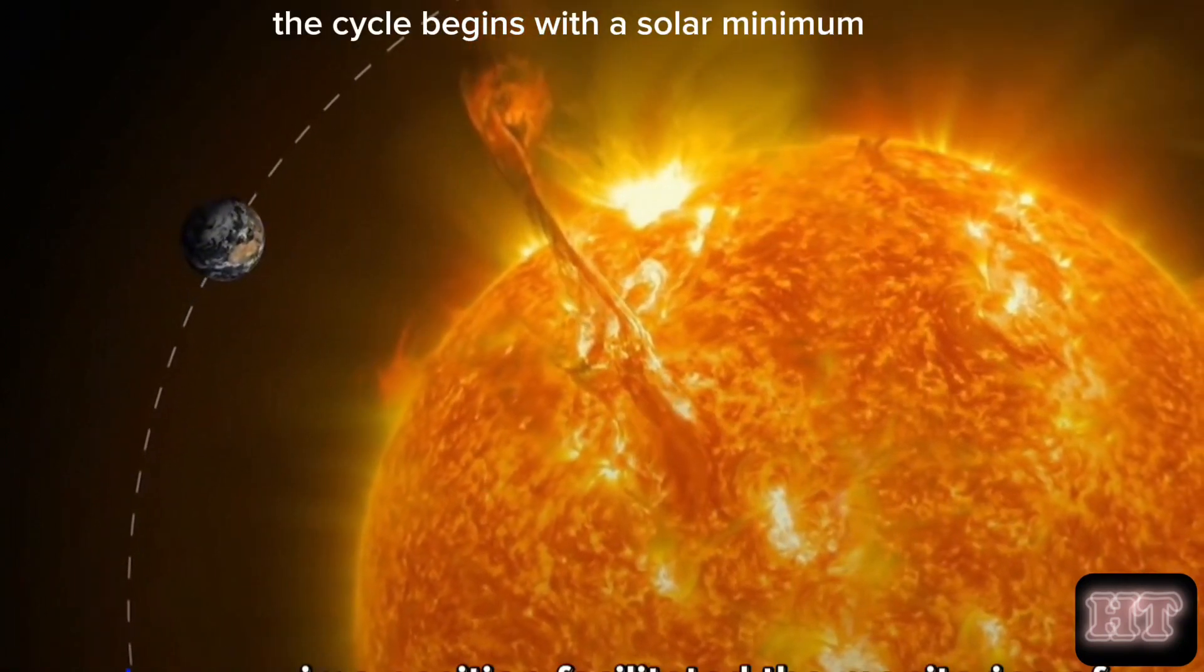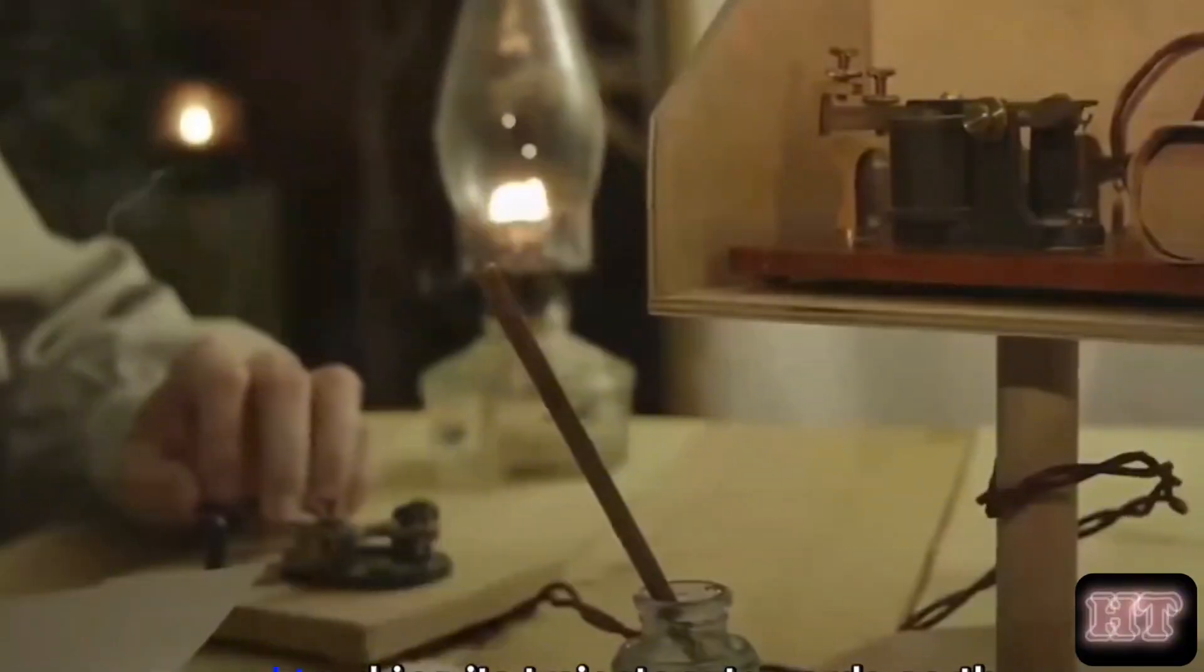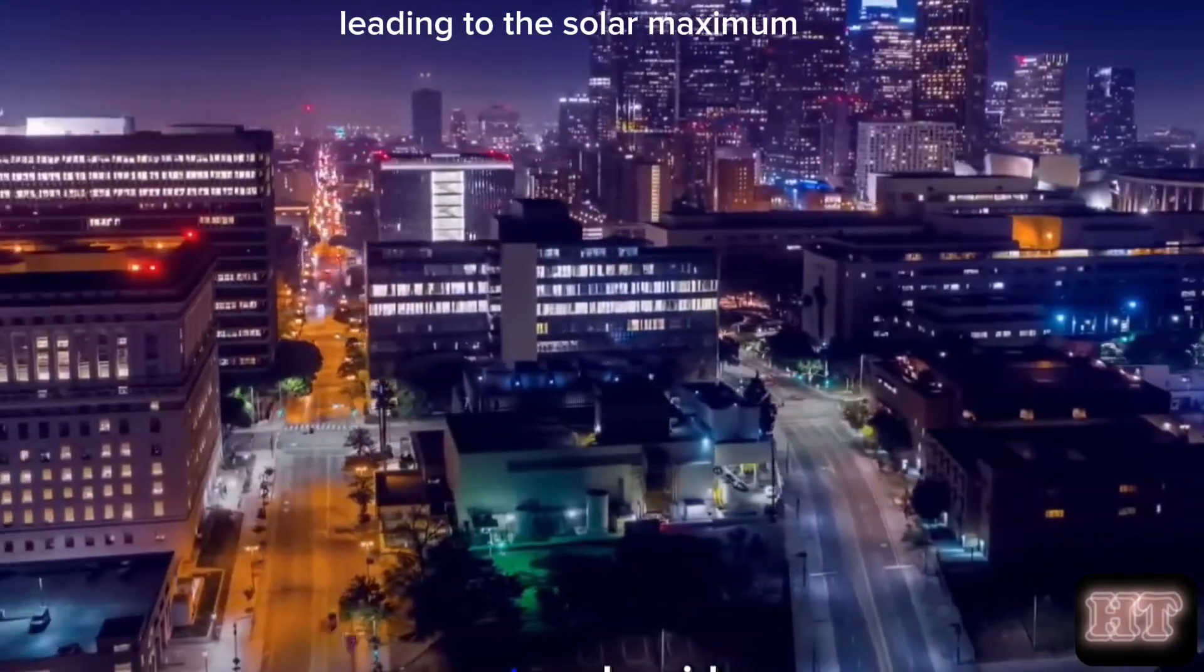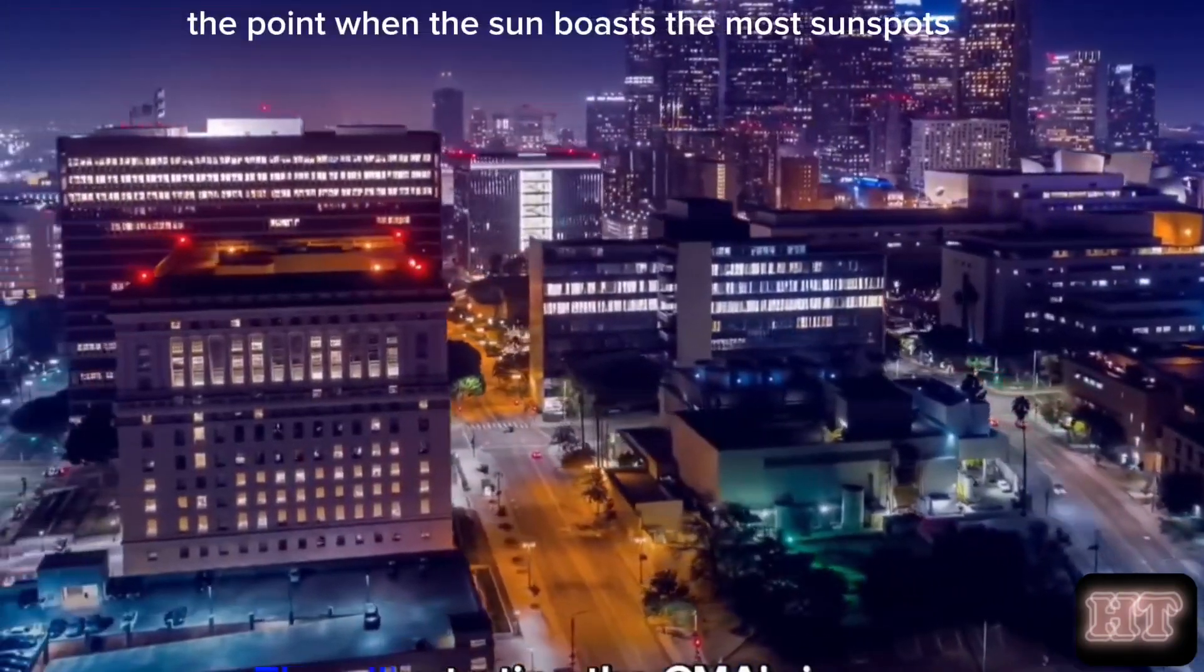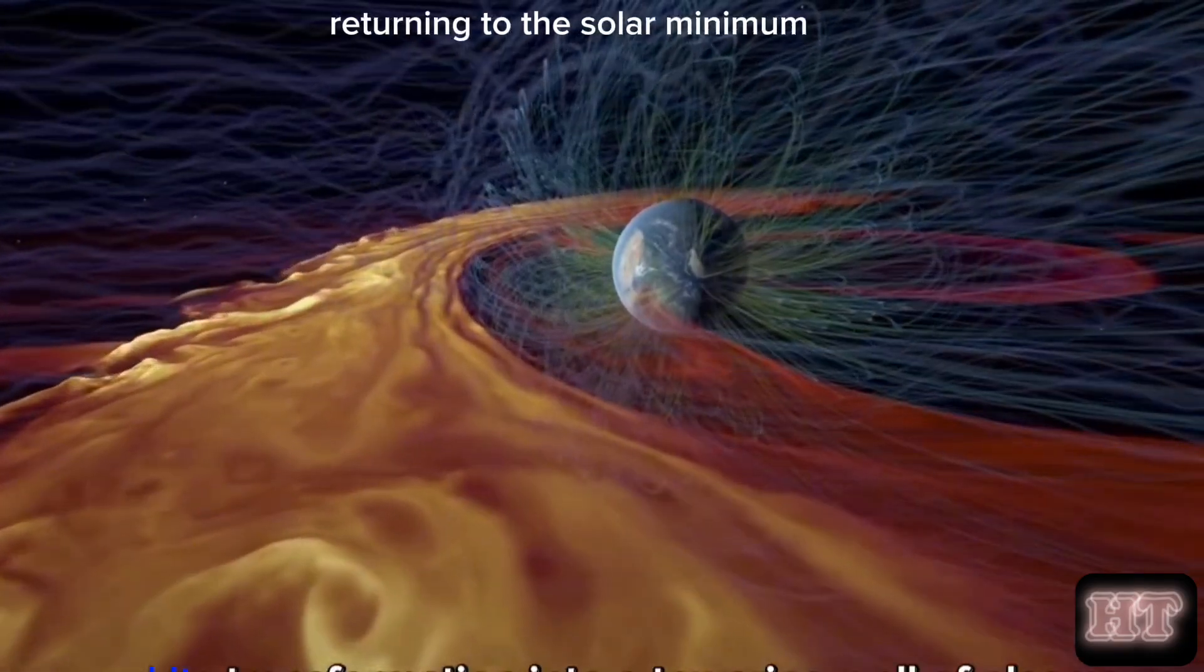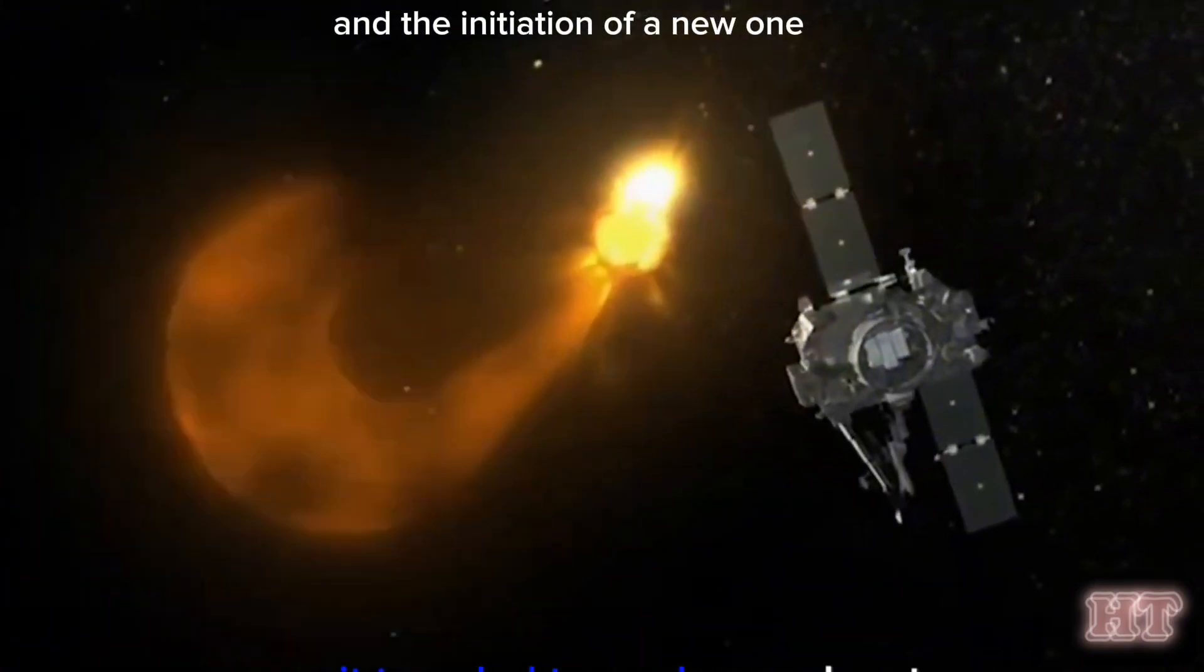The cycle begins with a solar minimum, characterized by the sun having the fewest sunspots. As time progresses, solar activity increases, leading to the solar maximum, the point when the sun boasts the most sunspots. Eventually, the cycle subsides, returning to the solar minimum, marking the completion of one cycle and the initiation of a new one.